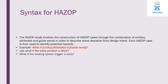Regarding the syntax for HAZOP: the HAZOP study involves the construction of HAZOP cases through the combination of entities, attributes, and guide words in order to describe deviations from design intent. Each HAZOP case is then used to identify potential hazards. The syntax is: 'What if [entity] [attribute] is [guide word]?' For example: 'What if the valve position is more?' or 'What if the existing system trigger is early?'